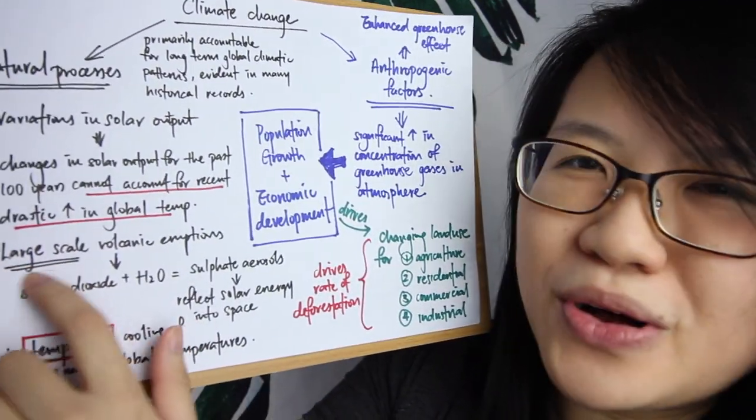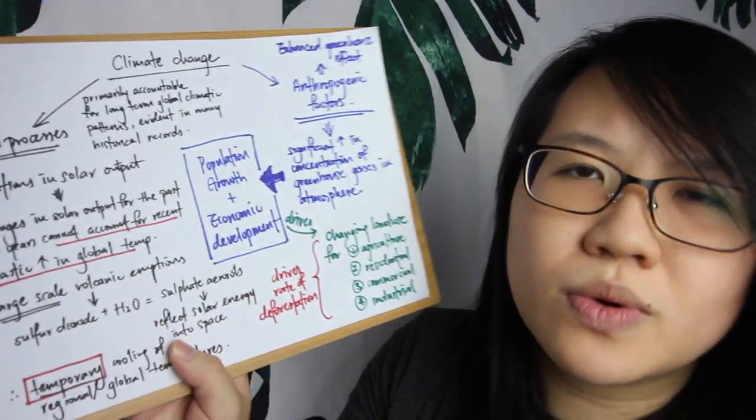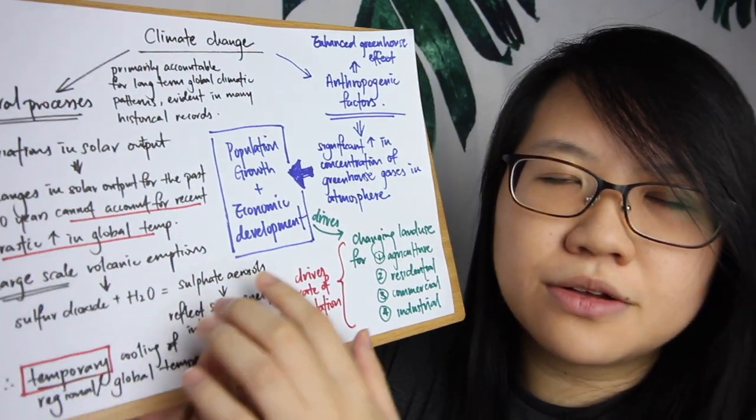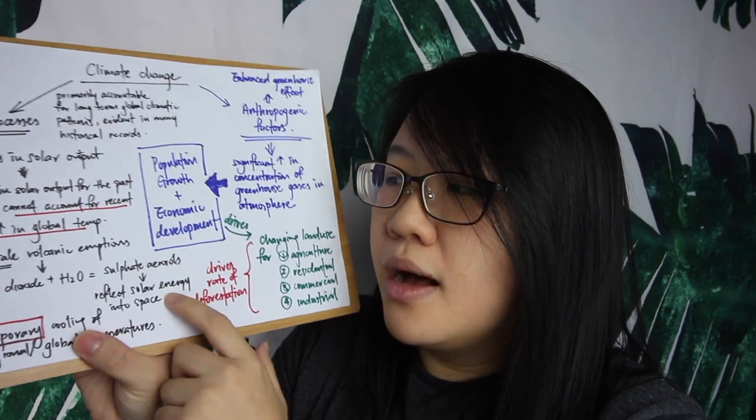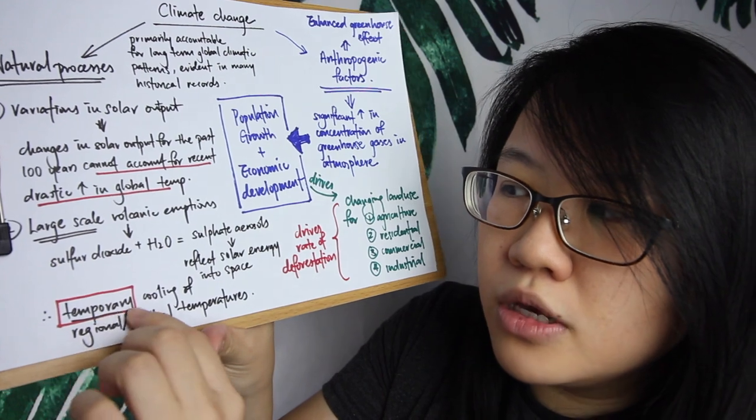Next we have large-scale volcanic eruptions. Not all volcanic eruptions lead to a change in global temperatures — it must be large-scale. Volcanoes produce not only lava and volcanic ash but also volcanic gases. One such gas is sulfur dioxide, which reacts with water vapor in the atmosphere to form sulfate aerosols — particles that reflect solar energy back into space. With large amounts of sulfate aerosols suspended in the atmosphere, most solar energy may be reflected to space, resulting in temporary cooling. The textbook example is Mount Pinatubo, which erupted in 1991 and caused a 0.6°C decrease in global temperature for a few weeks or months.